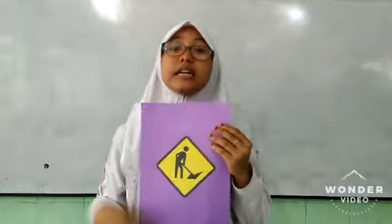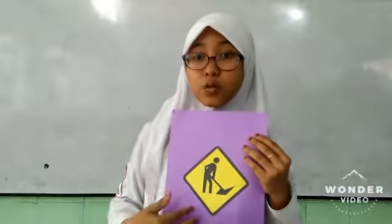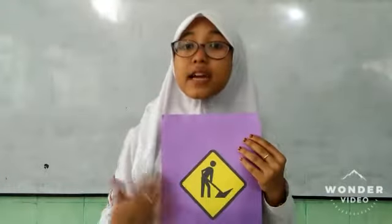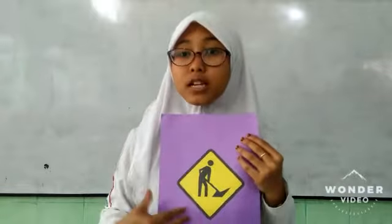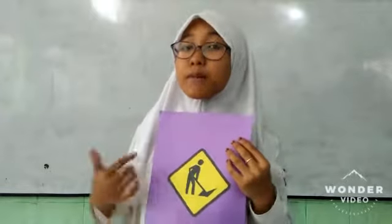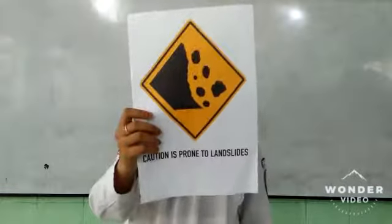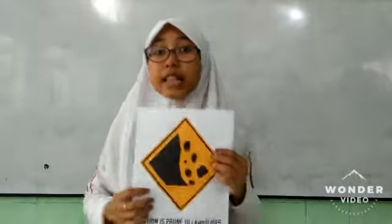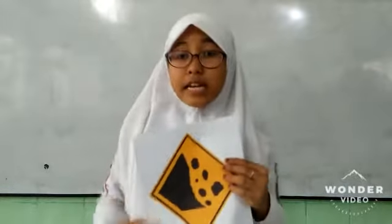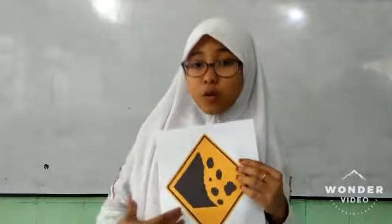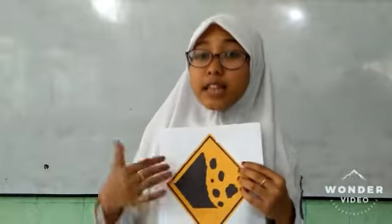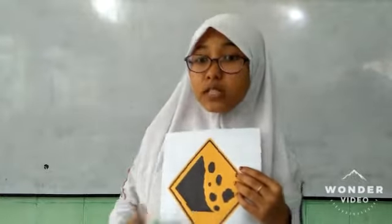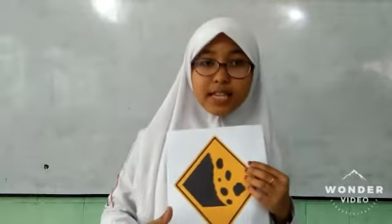Nine, this sign shows that there is a floating light around the place. Ten, this sign shows that there is a long light around the place.